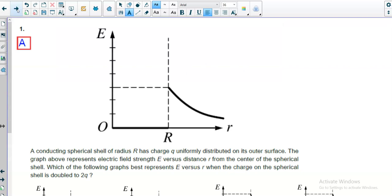Number one. A conducting spherical shell of radius R has charge Q uniformly distributed on its outer surface. The graph above represents electric field strength E versus distance r from the center of the spherical shell. So here's the big idea.